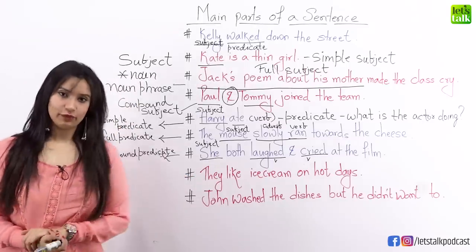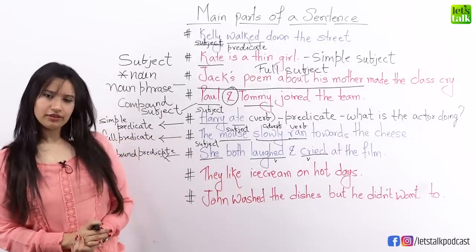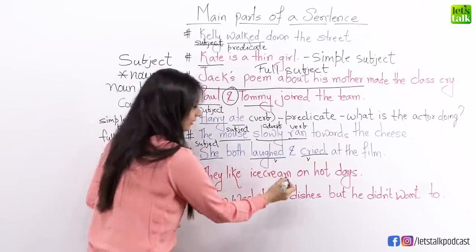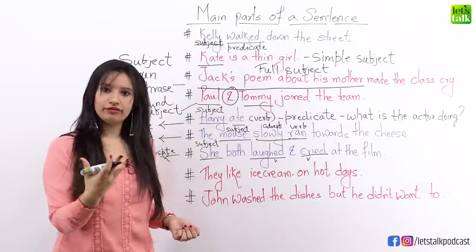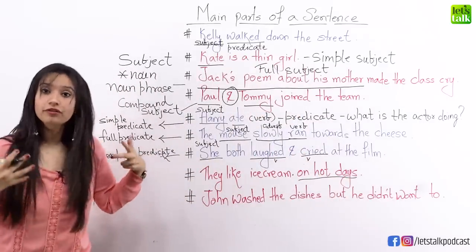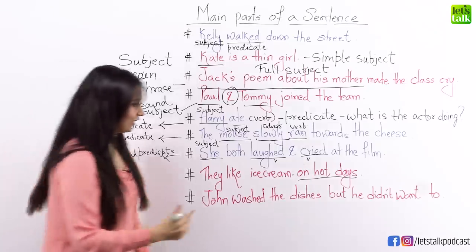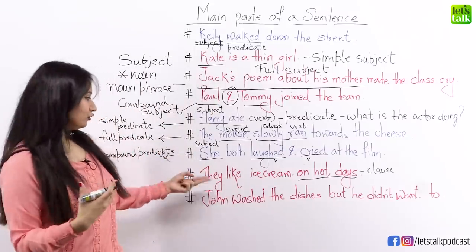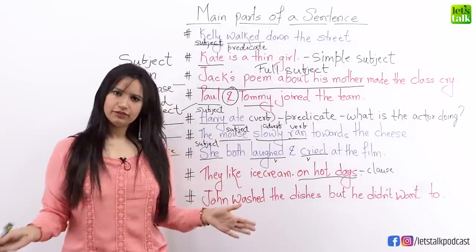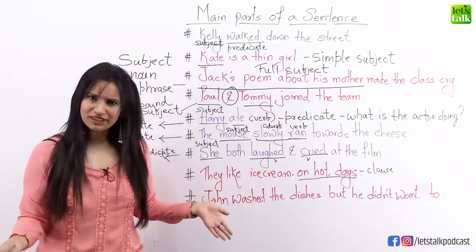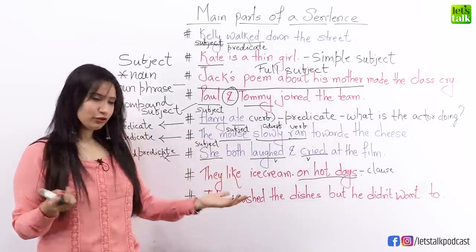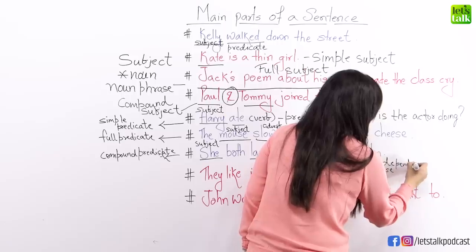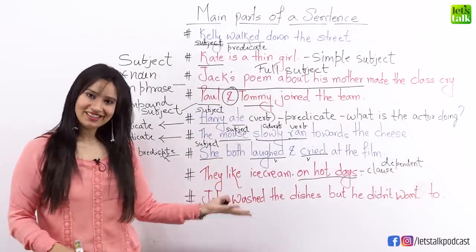Now let's look at: They like ice cream on hot days. It's a complete sentence, but if I only say 'they like ice cream,' wouldn't that be enough? By adding 'on hot days,' I'm giving more information. Whenever we add more information like this, we are adding a clause. 'On hot days' is a clause used to add more information to a sentence. But can 'on hot days' stand alone as a full sentence? It cannot. So whenever a clause cannot stand on its own, it's called a dependent clause, because it depends on the main part of the sentence.